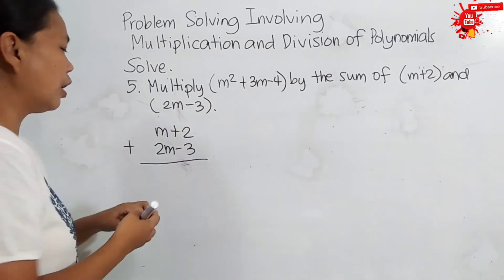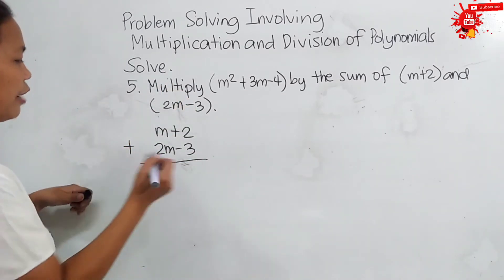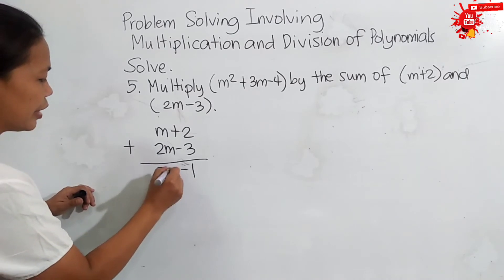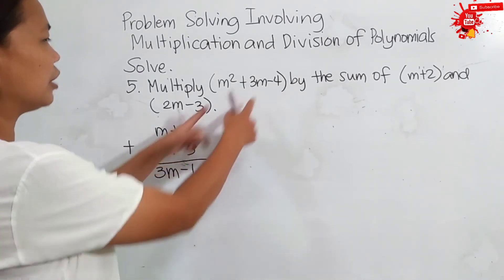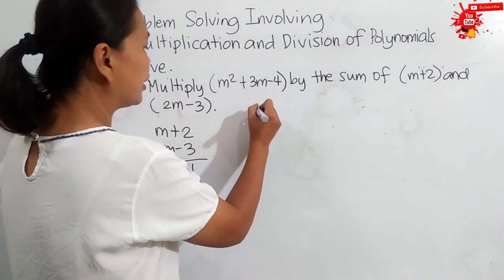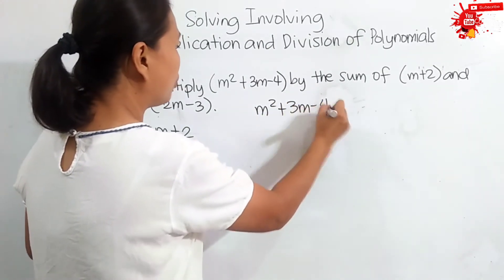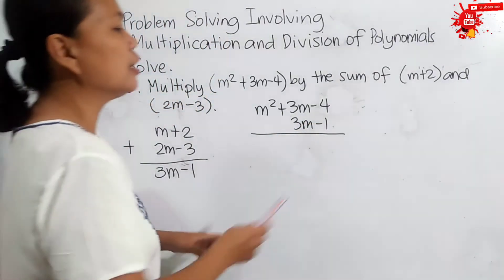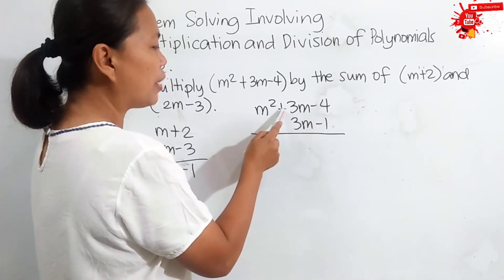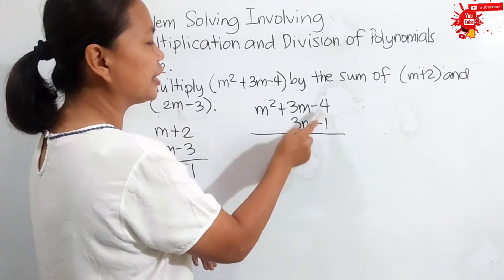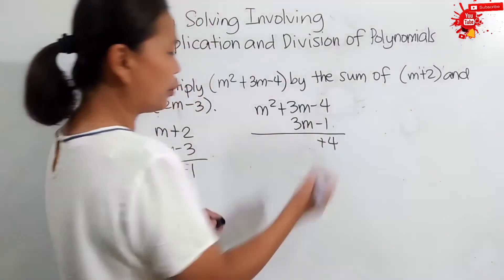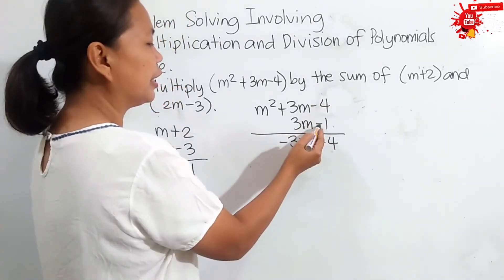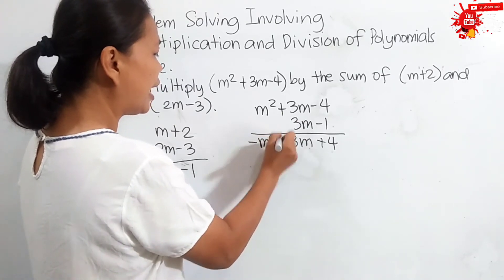We align vertically with similar terms. Positive 2 plus negative 3 gives negative 1, and m plus 2m gives 3m. So, the sum is 3m minus 1. Now, we will multiply 3m minus 1 by m squared plus 3m minus 4 using the vertical method. First, we multiply negative 1 by negative 4, by positive 3m, and by m squared. Negative 1 times negative 4 is positive 4. Negative 1 times positive 3m is negative 3m. Negative 1 times m squared is negative m squared.